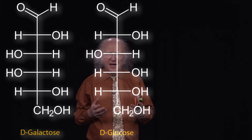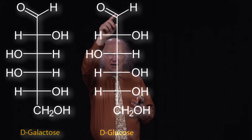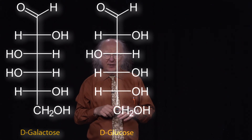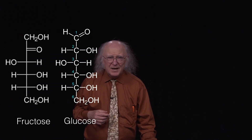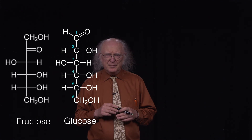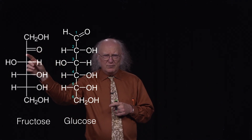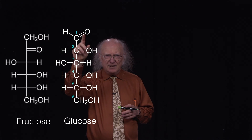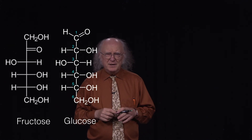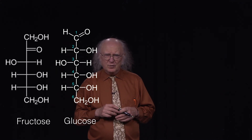Each of these sugars is known as an aldose, and an aldose is a sugar that has an aldehyde. If we look at the top, we see the C double bond O with the H on one side for both glucose and galactose — those aldehyde groups give them the name aldose. Fructose is an example of a sugar we call a ketose, meaning it has a ketone. Both glucose and fructose have six carbons, so we refer to them as hexoses. If they had five carbons, we'd call them a pentose; four carbons, a tetrose, and so on.